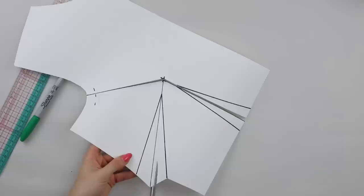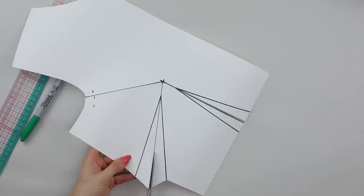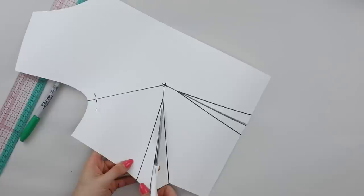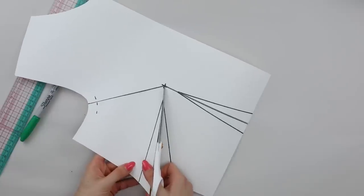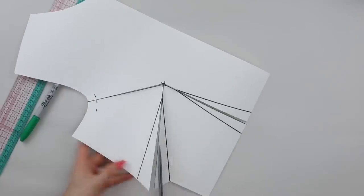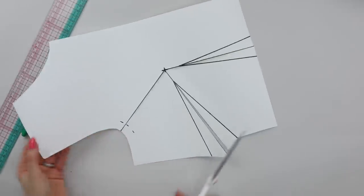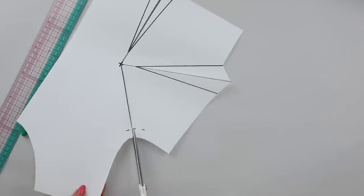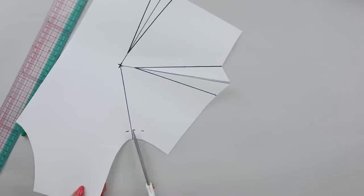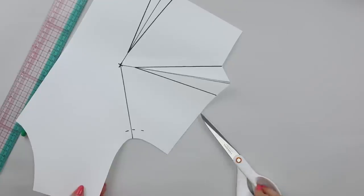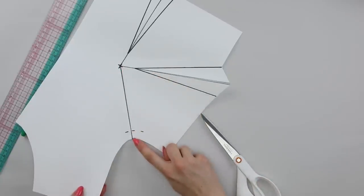You're also going to cut up through the side darts to the bust apex but not through the bust apex, and also you're going to cut from the armhole through to the stitching line if your pattern has seam allowances on it. If it doesn't, then you would simply cut from the bust apex to the armhole and leave a hinge at the armhole.